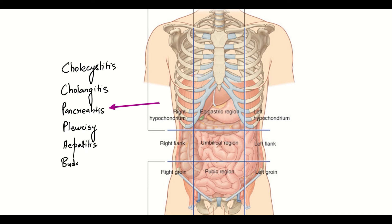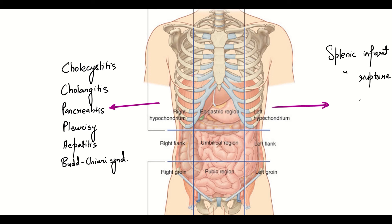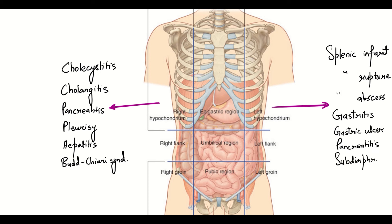Similarly, the left hypochondrium has the spleen, stomach, the pancreas and the diaphragm. So, pain in this region should point towards splenic infarct, rupture or an abscess, gastritis, gastric ulcer, pancreatitis or a sub-diaphragmatic abscess.